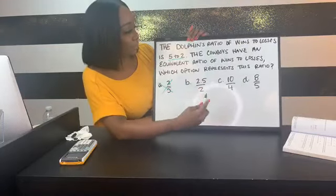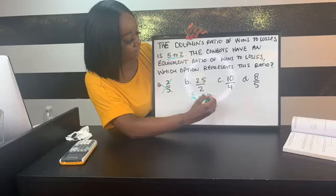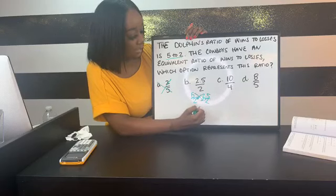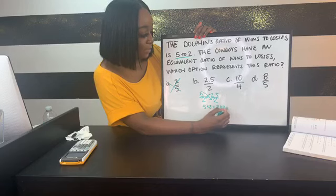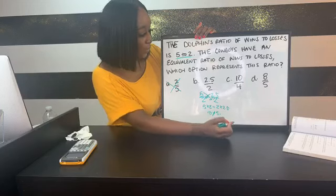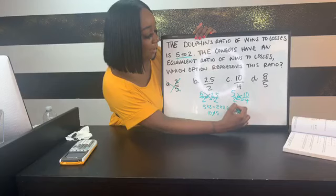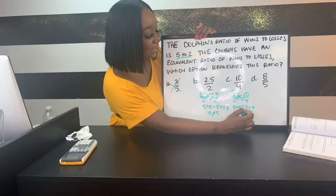We set up 5 over 2 equal to 2.5 over 2 and cross multiply top to bottom: 5 times 2 equals 2 times 2.5, which gives 10 equals 5 — those aren't equal, so we move on. Next: 5 over 2 equals 10 over 4. Cross multiply: 2 times 10 equals 5 times 4, so 20 equals 20. In this instance it does work, so this is our equivalent ratio. The last one: 2 times 8 is 16, and 5 times 5 is 25 — those aren't equal, so that doesn't fit.